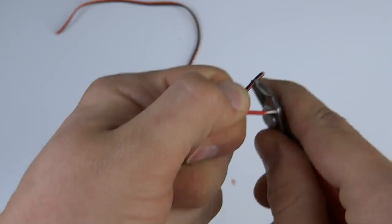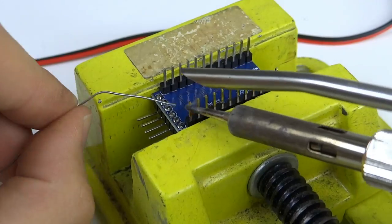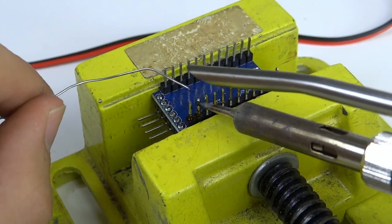Then we can solder two cables to the RAW and GND pins of Arduino. To insulate it, I used shrink cable sleeves.